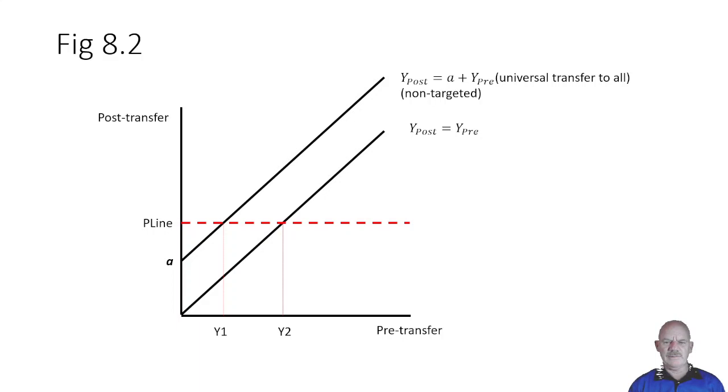But if everybody, even the rich, so we're grouping the rich here on the right of the graph, they also get the A. So their income also increases by A. So everybody gets a transfer if we just shift the straight line up. This means non-targeted transfer of A, that's the amount, to everyone.